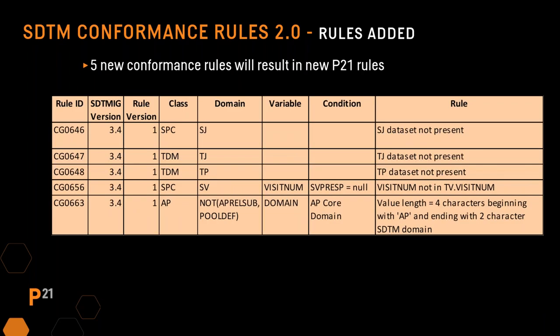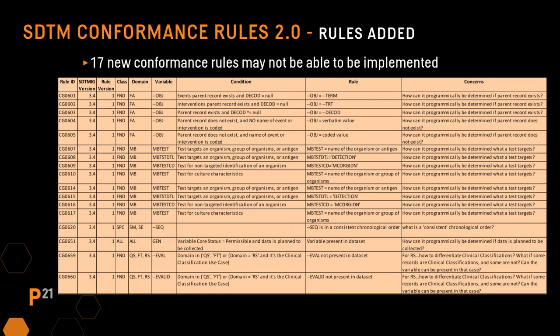There are five new conformance rules that will result in new Pinnacle 21 rules. Three are for SEND-only domains that shouldn't be used in clinical trials, and the other two are new rules that need to be added. The 17 new conformance rules that may not be able to be implemented are either vague, require manual or human judgment, or there is just no certain way to reliably program the check to get accurate findings.